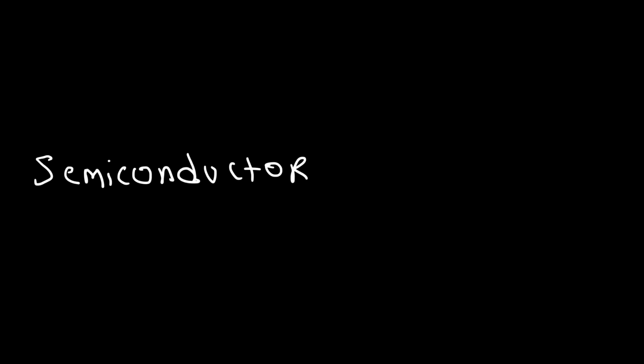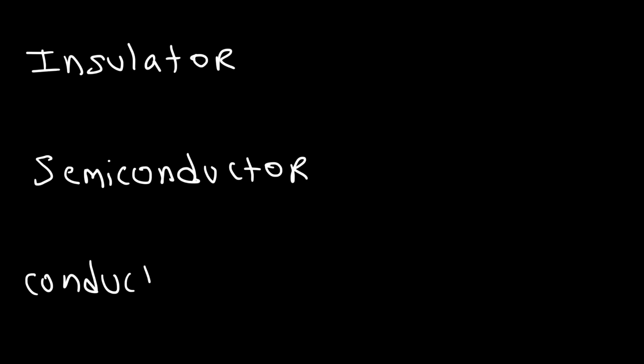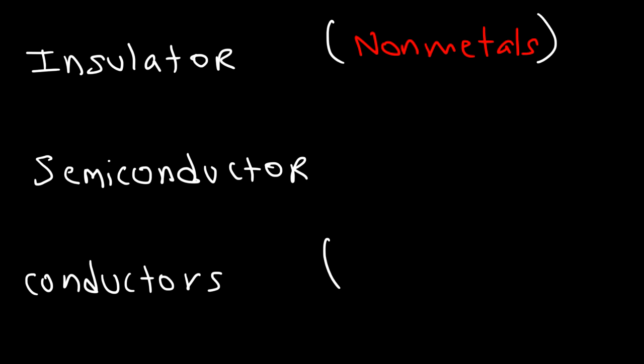In this video we're going to talk about semiconductors. Semiconductors have properties that are in between an insulator and a conductor. Insulators do not conduct electricity at all — they have a very high resistance to the flow of electricity. Insulators consist of nonmetals such as sulfur and iodine. Conductors, on the other hand, such as metals like zinc, copper, and aluminum, are excellent conductors of electricity.